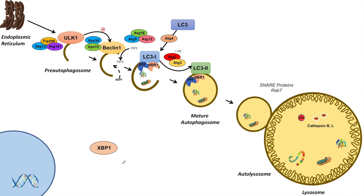The next regulator of the macroautophagy pathway is XBP1, which is activated during ER stress and has a dual function in regulating macroautophagy. In one way it actually upregulates some proteins in the pathway, and in other ways it suppresses others. When XBP1 enters the nucleus upon activation, it can upregulate Beclin-1.